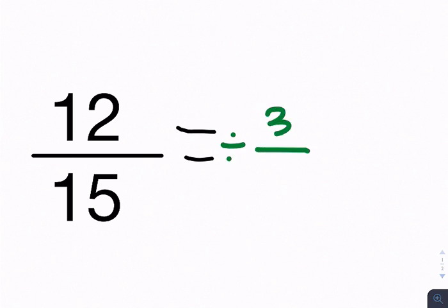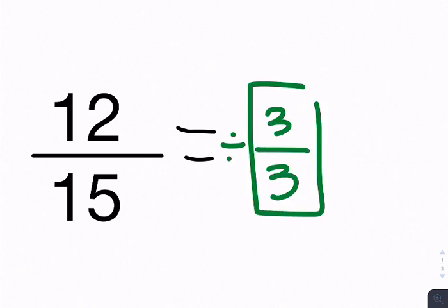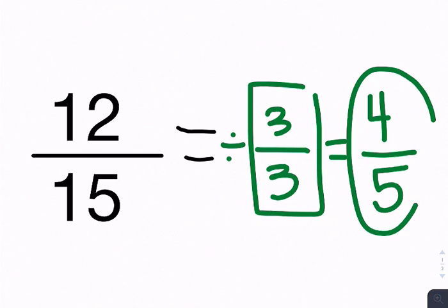3 it does. So 3 over 3. Keeping my fractions equivalent. 12 divided by 3 is 4. 15 divided by 3 is 5. 4 and 5. The only number that can divide by both of those is 1. So it cannot be simplified any further.